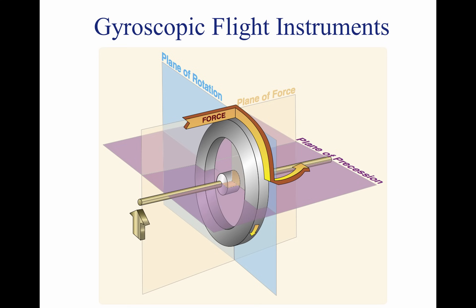This principle allows the gyro to determine a rate of turn by sensing the amount of pressure created by a change in direction. Using the example of the bicycle, precession acts on the wheels in order to allow the bicycle to turn. While riding at normal speed, it is not necessary to turn the handlebars in the direction of the desired turn — a rider simply leans in the direction that he or she wishes to go. Since the wheels are rotating clockwise when viewed from the right side, if a rider leans to the left, a force is applied to the top of the wheel to the left, acting 90 degrees in the direction of rotation, which has the effect of applying a force to the front of the tire, causing the bicycle to move to the left. There is a need to turn the handlebars at low speeds because of the instability of the slowly turning gyros, and also to increase the rate of turn.